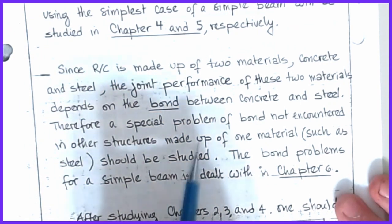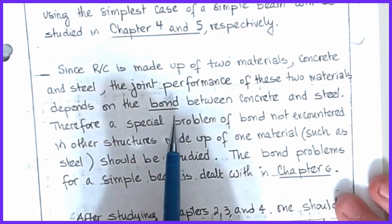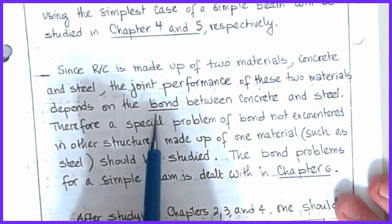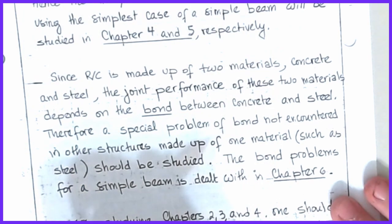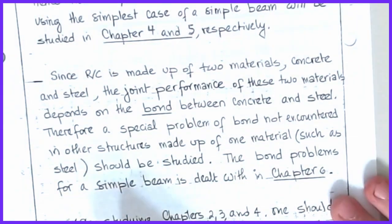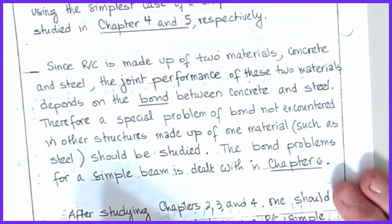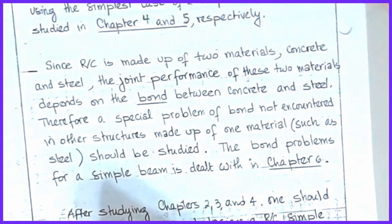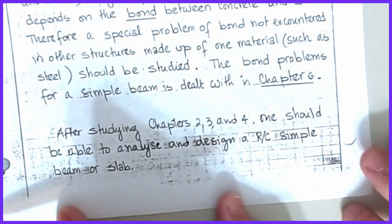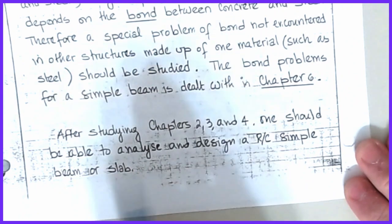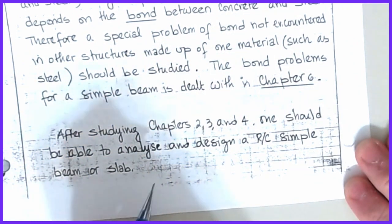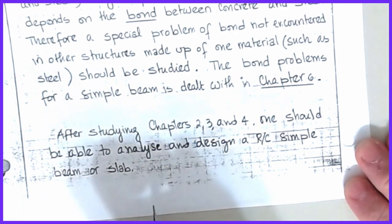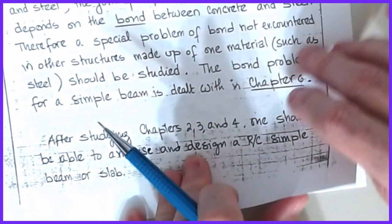We'll talk about some of those topics. We won't do nearly enough justice to the study of bond, development length, or transfer length, but it is an important idea to at least be aware of, and we'll work some problems according to the ACI specifications in that area. Once we've gotten through chapter 6, we should be in great shape to analyze any beam or slab — whether it's doubly reinforced, a T-beam, singly reinforced, or a one-way slab.